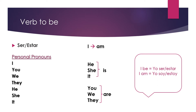I — am. He, she, it — is. You, we, they — are. We need to change the spelling of the verb to be when we use a pronoun because the verb is bound to the pronoun, and it always has to be like this when we talk in the present.